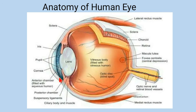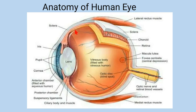Between the lens and the retina, a vitreous body is present, filled with vitreous humor, which keeps the eyeball shape firm and rigid. The vitreous humor is a jelly-like structure, while the aqueous humor is a watery fluid. The sclera is the outermost layer; next to it is the choroid, which provides nourishment; and the third layer is the retina, which contains photoreceptor cells.